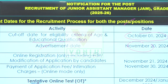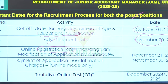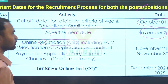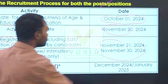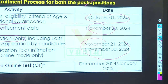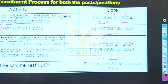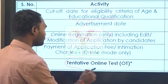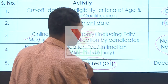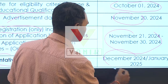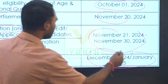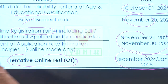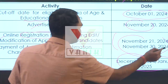Online registration is from November 21st to November 30th. The tentative online test is scheduled from December 22nd to January 1st. These are the important dates to keep in mind.